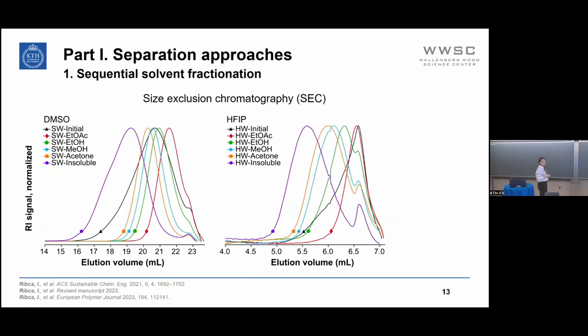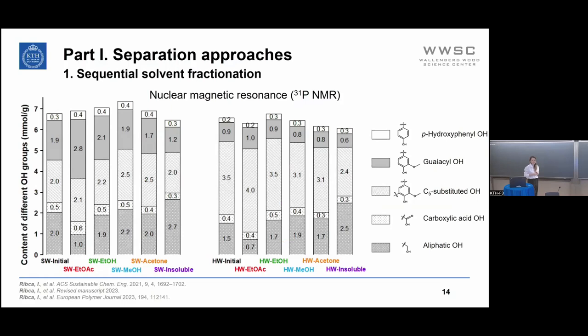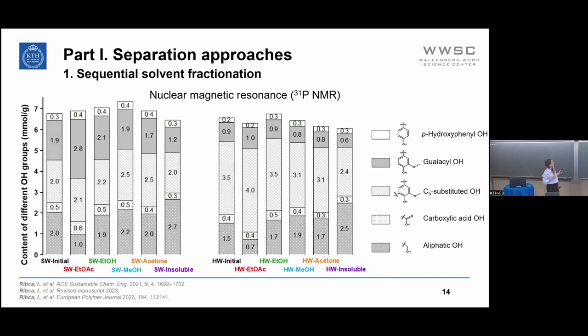We also performed size exclusion chromatography and found that molecular weight increases going from the ethyl acetate fraction to the insoluble fraction. We quantified different functionalities in the lignin — aliphatic, carboxylic, and phenolic OH groups — using phosphorus NMR, expressed as millimoles of OH groups per gram of lignin. The biggest difference between softwood and hardwood lignin is in the distribution of functional groups: aliphatic OH is higher in softwood, syringyl and C5-substituted OH is higher in hardwood, and guaiacyl OH is higher in softwood, consistent with the monolignol distribution in each plant type.